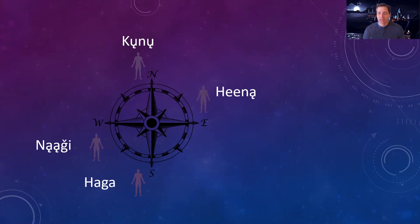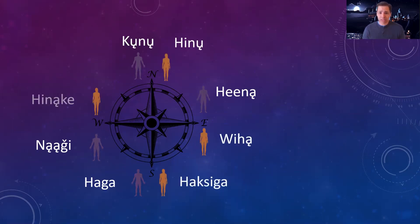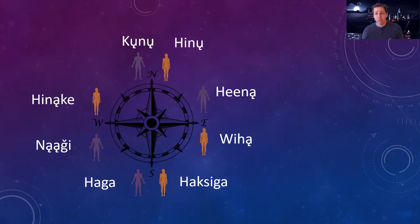These were the first four brothers. The creator decided they were still incomplete and would need help to make their way through this world, so the first four women were created: Hinu, placed in the north; Wiha, placed in the east; Haksiga, placed in the south; and Hinanke, placed in the west. These were the first eight human beings created. Our birth order names — everybody who's born, depending on the order in which they are born — takes one of these names in remembrance of this portion of our creation story.